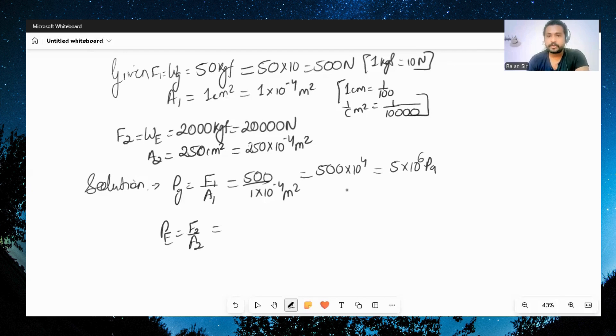So we got 20,000 newton upon 250 times 10 raised to minus 4. So that would be, let's cancel this: 25 times 4 is 100, 25 times 8 is 200, extra 80, so we got 80 times 10 raised to 4. That would become 0.8 times 10 raised to 6 pascal.